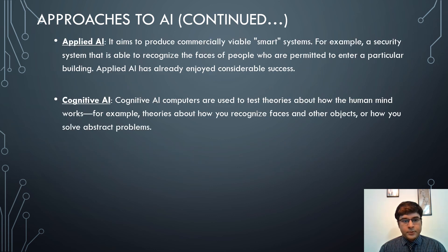The third approach is applied AI, which aims to produce commercially viable smart systems. For example, a security system that is able to recognize the faces of people who are permitted to enter a particular building.